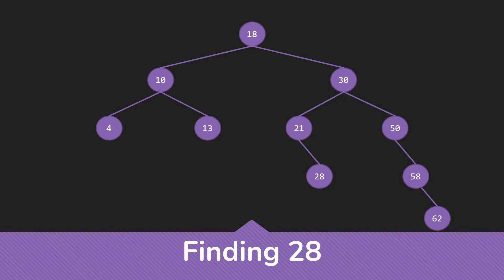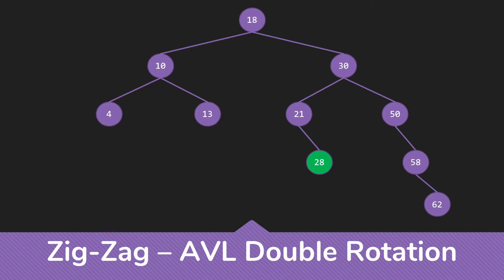Let's try another example and go find the 28. Again, we're going to go through the standard process of finding the item. Then we're going to come back out, generally unwinding recursion. We're going to see that the 28 is the right child of its parent, but its parent is the left child of the grandparent. So 28 is the right child of the 21, the 21 is the left child of the 30. So that means we need to do a zigzag or AVL double rotation.